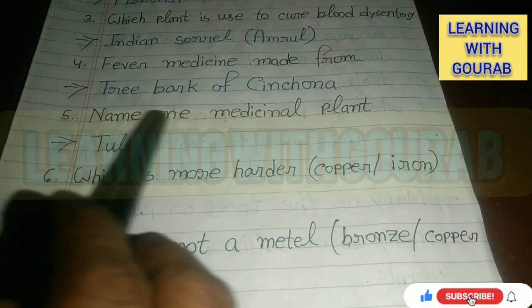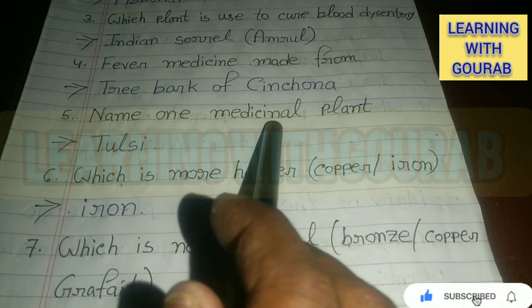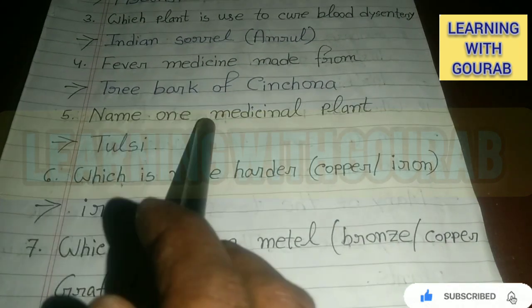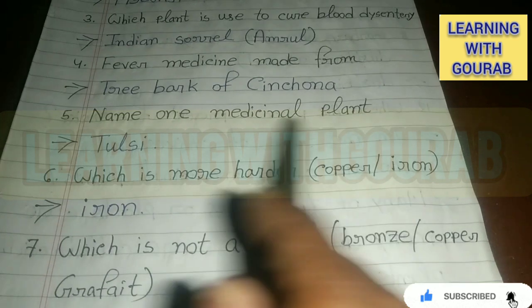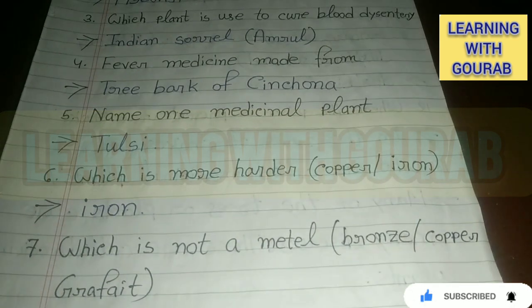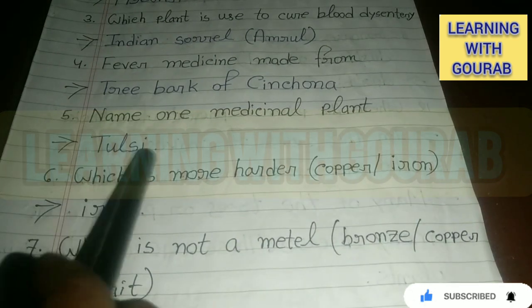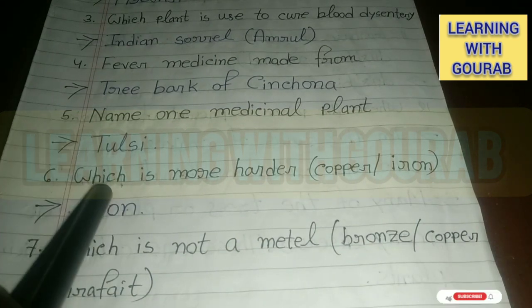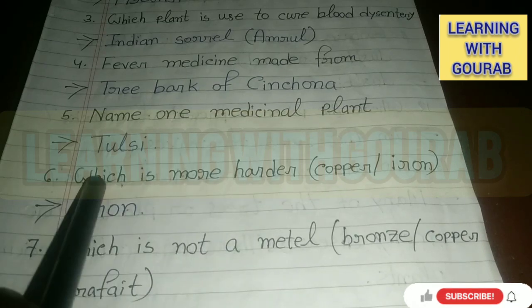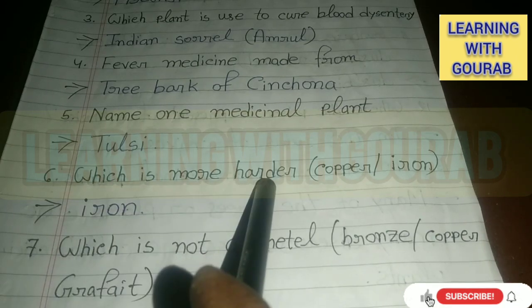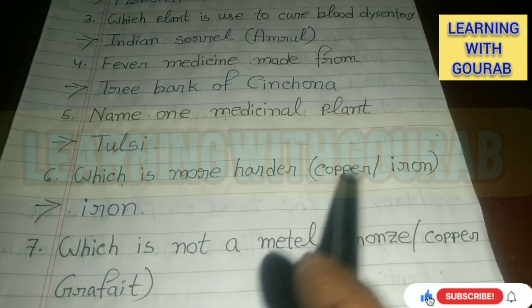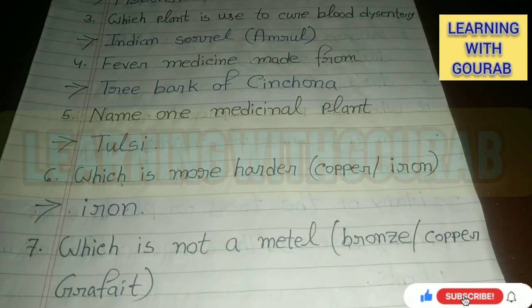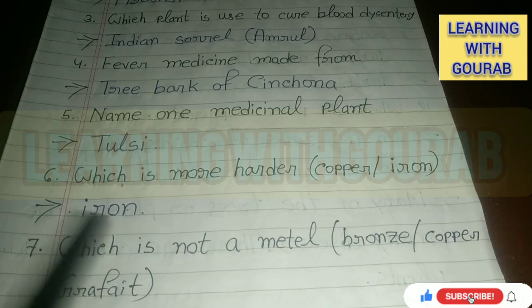Name one medicinal plant. Answer: Tulsi. Which is harder — copper or iron? Answer: Iron.